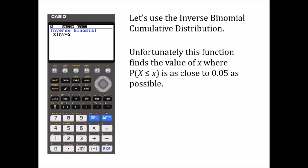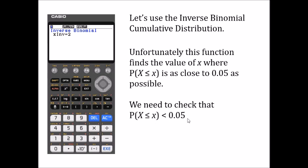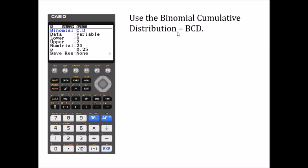Unfortunately the function on this graphic calculator finds the value of x where the probability that x is less than or equal to that value is as close to 0.05 as possible — which is useful in later problems. But here we need the value of x where the probability is actually less than 0.05, so we have to go back and check. We use the normal binomial cumulative distribution function on the calculator.